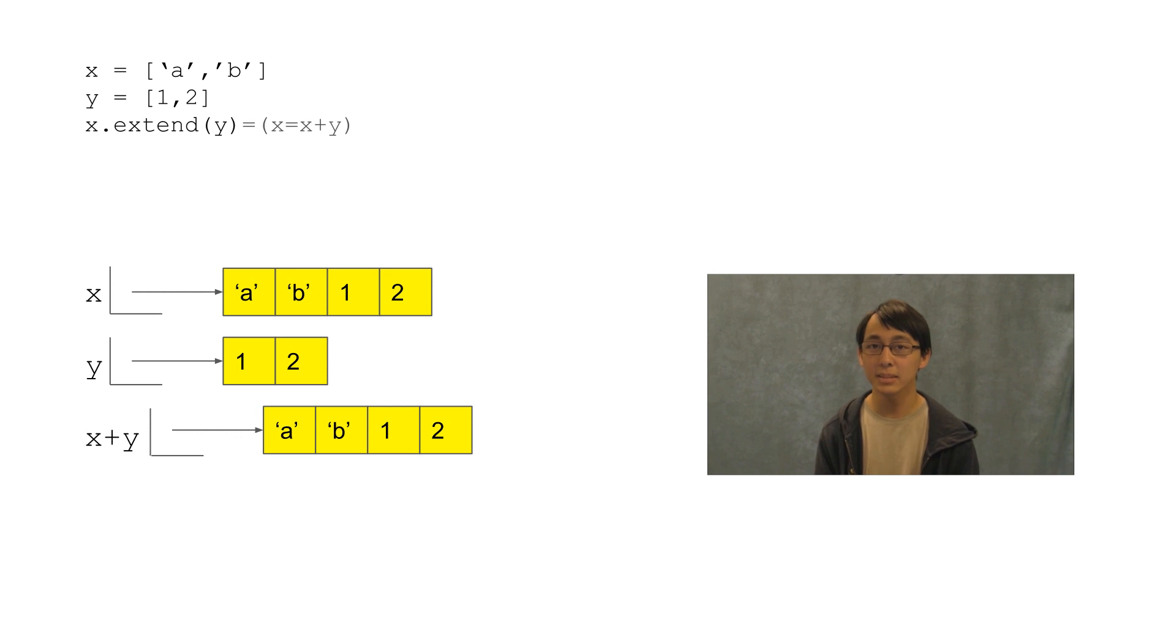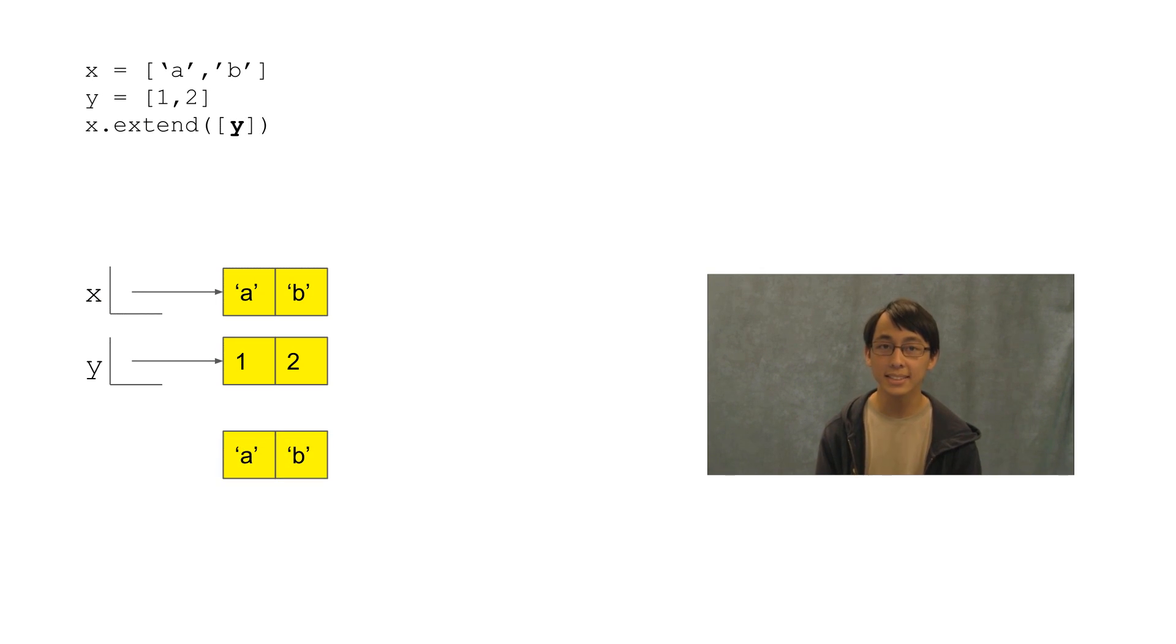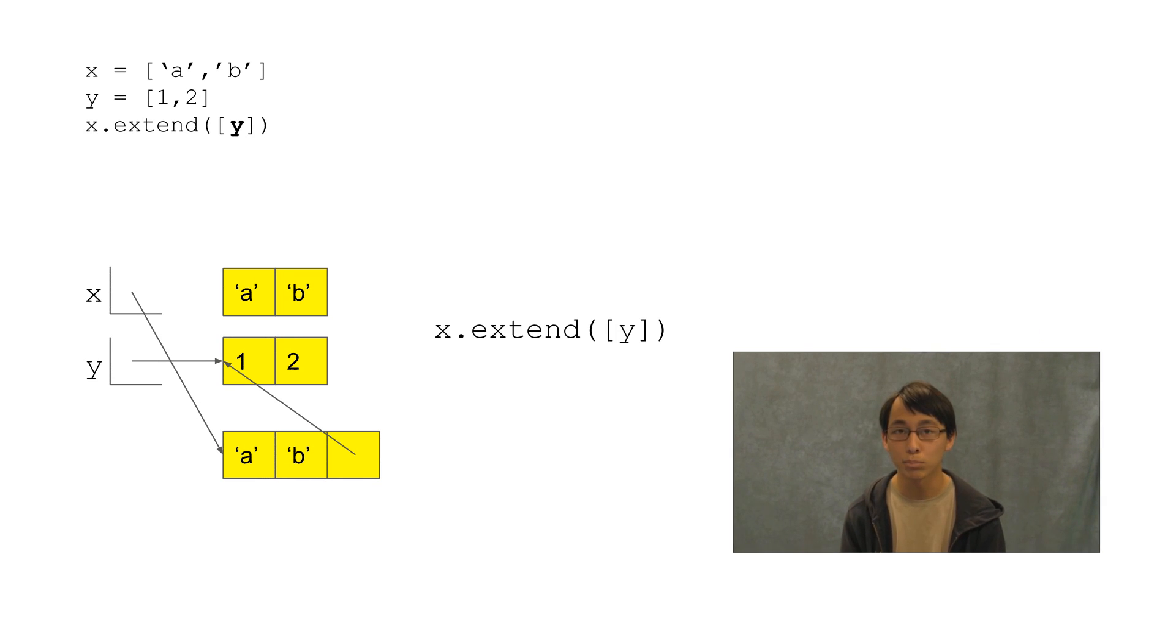But what happens when we do this x plus in brackets y, or in other words, x dot extend brackets y? Well, let's think carefully and not overcomplicate things. We're still adding two lists. The first is x, and notice that this next list has only one thing in it. So our sum result here is going to have three boxes. So what's in this third box? Well, it's our y list. So it'll contain an arrow that points to our y list, and that'll be our result. The big idea here is that when we add lists, this will copy the list and this brackets y will not. This bracket y is going to point to the same thing that y points to instead of copying it.